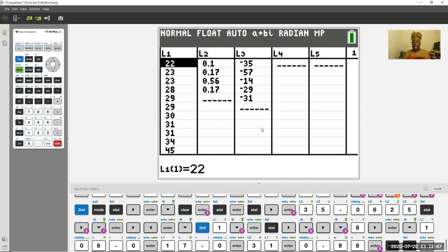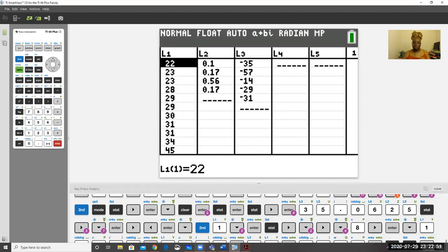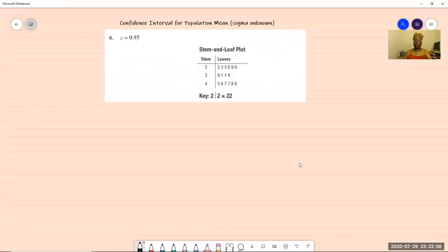Now I've already put the information into the calculator. Here are the data pieces. You can always pause the video and go back and put those data pieces in so you can follow along with me. I usually put all my pieces in L1, which I did here. So here are all our data points that we have here for L1.